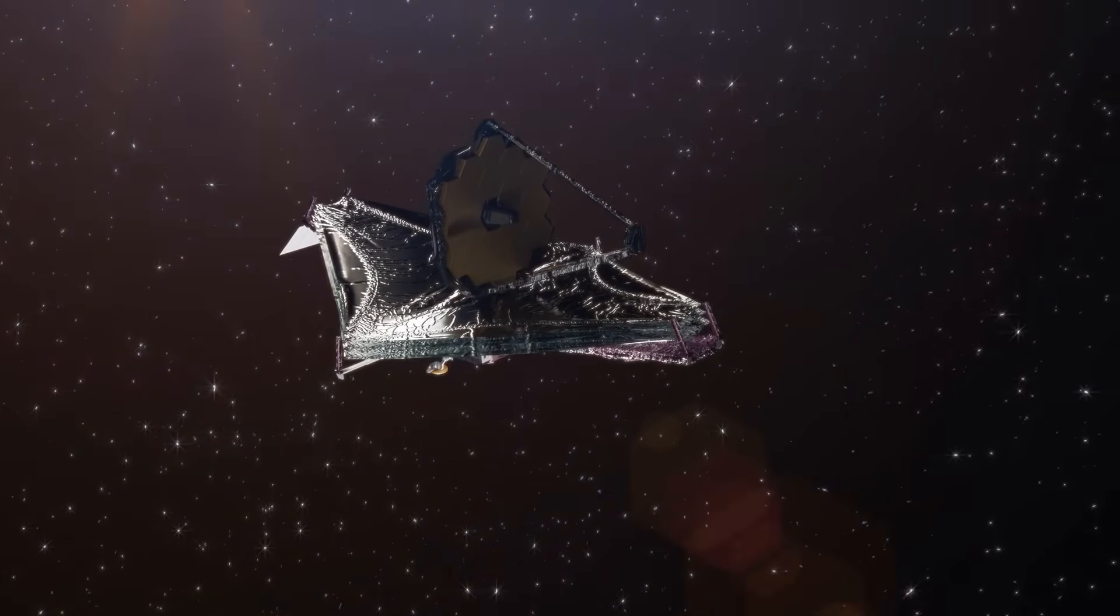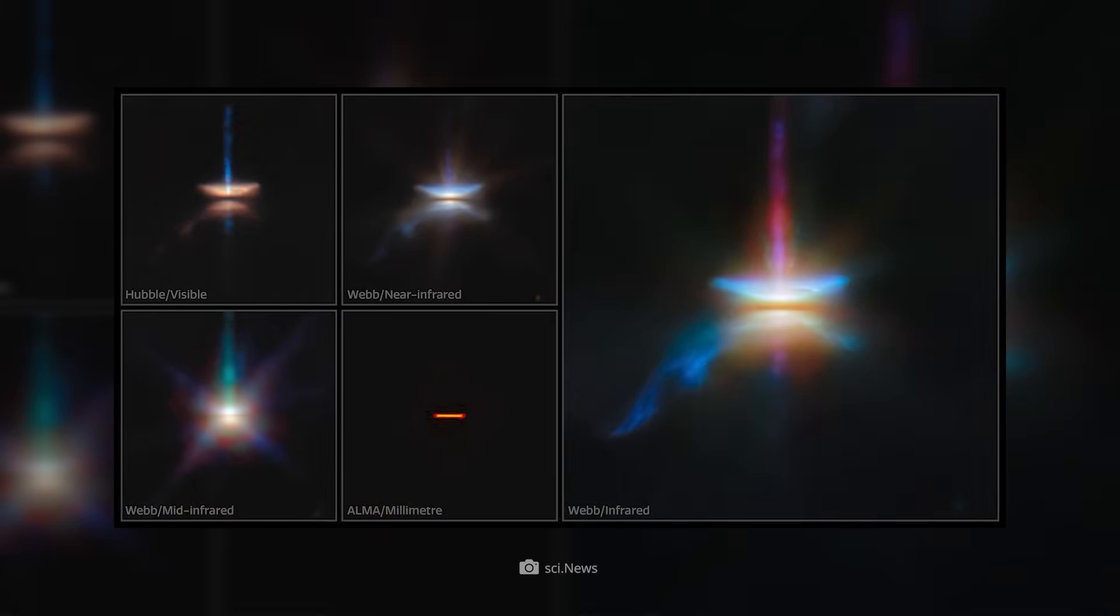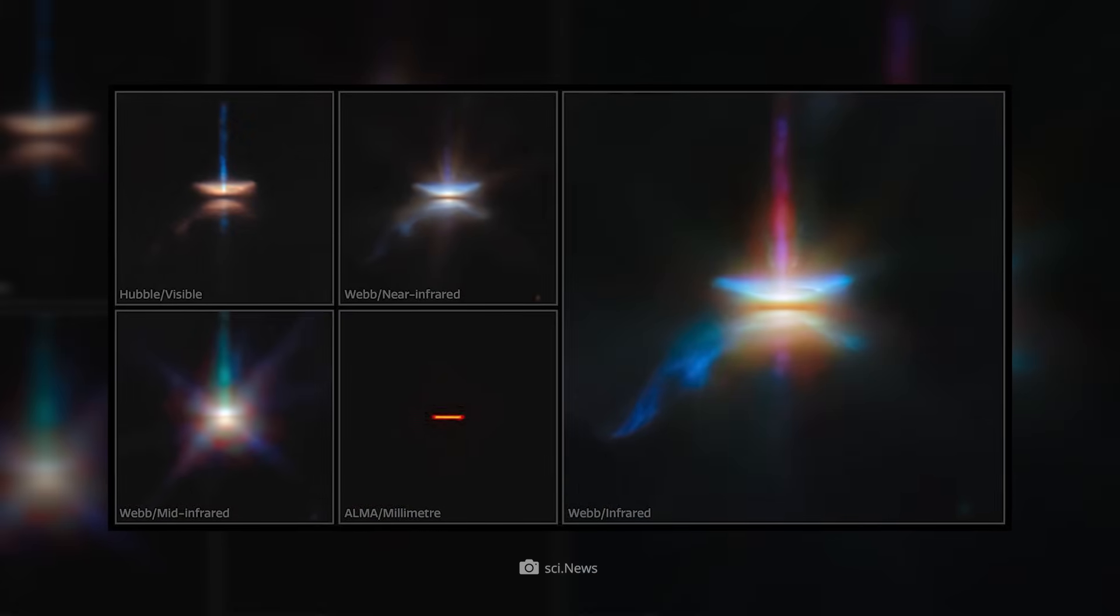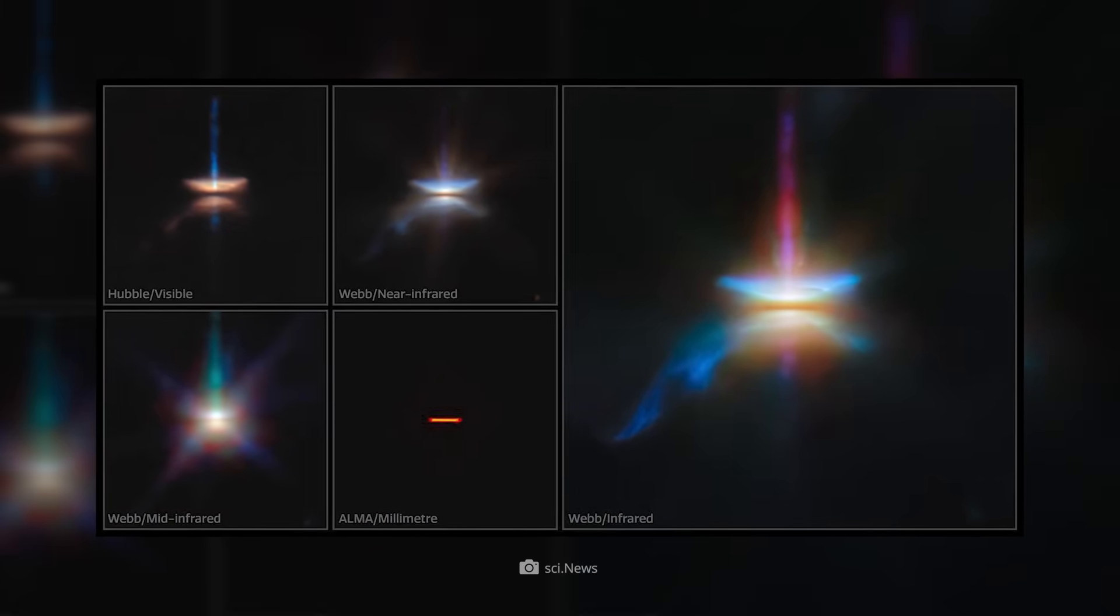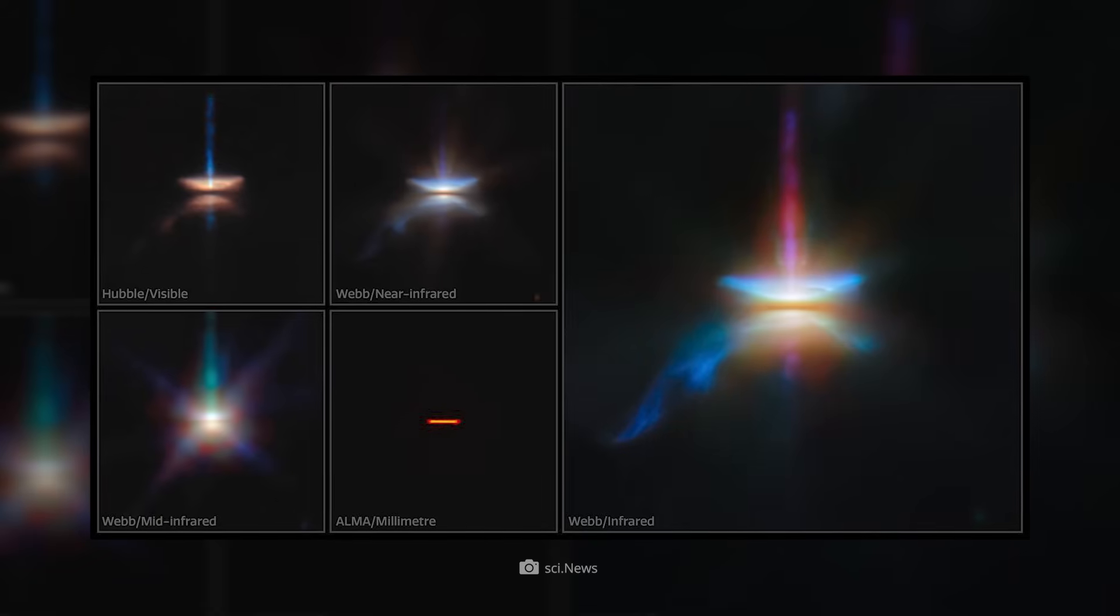These further aspects, now visible for the first time, provide scientists with more important information about the birth of a star. In the image now published by NASA, we see the protoplanetary disk, an ejection of gas and dust, and a narrow jet shooting up from the cloud.